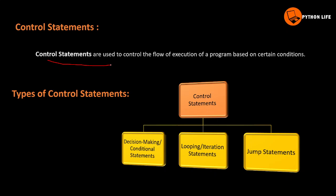Control statements are used to control the flow of execution of a program based on certain conditions. Control flow can be thought of like diversions on a road. There are three types of control statements.